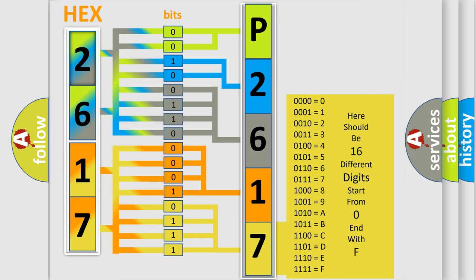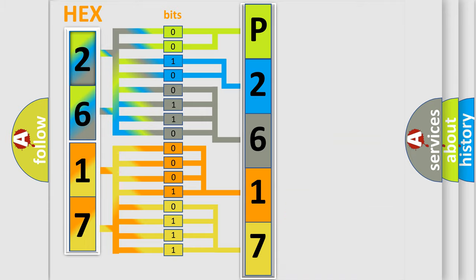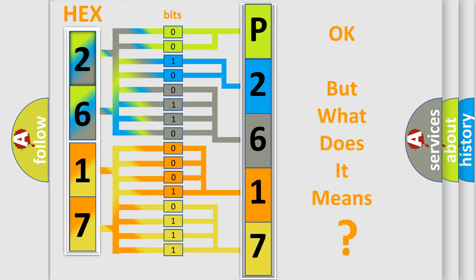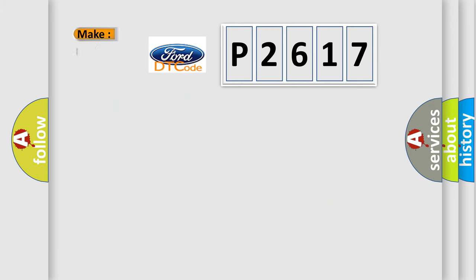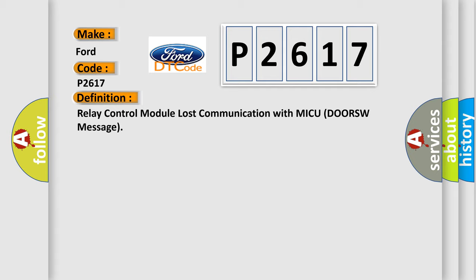We now know how the diagnostic tool translates the received information into a more comprehensible format. The number itself does not make sense if we cannot assign information about what it actually expresses. So, what does the diagnostic trouble code P2617 interpret specifically for Infiniti car manufacturers?